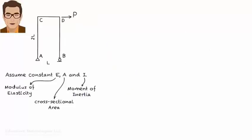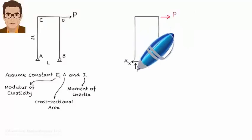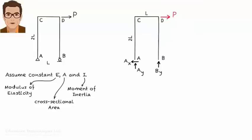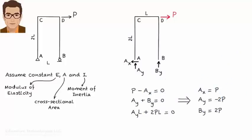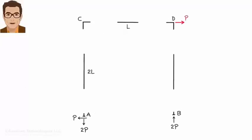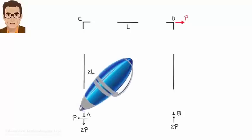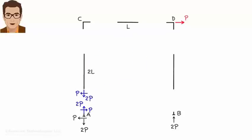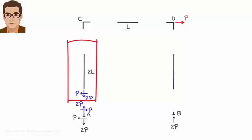We start by applying the equilibrium equations to the entire structure. Here is the system's free body diagram. There are three unknown support reactions, which we can calculate easily. Now we are ready to calculate member forces. Let's start with member AC. We know the forces at A, so we can apply equilibrium equations to the entire member to determine the forces at C. That is, the sum of forces in x equals zero, sum of forces in y equals zero, and sum of bending moments about point A equals zero.